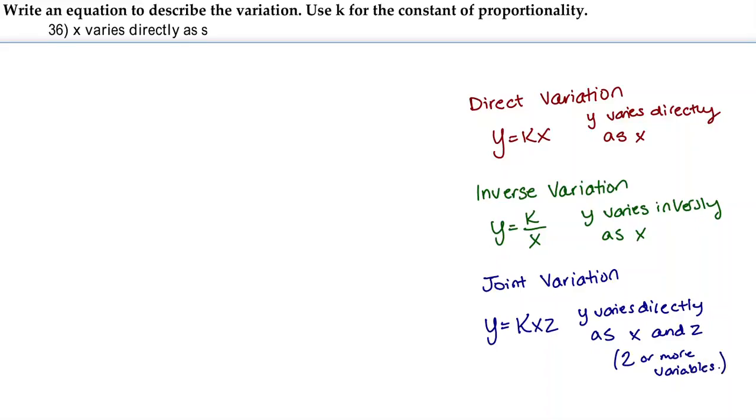So our constant for all of these formulas is going to be the k, which just means that when you apply this formula to a word problem, the k is going to be substituted for a value that's constantly going to be that value. Here we're not applying this to word problems, we're literally just writing down the equation to describe the variation. So in this problem...